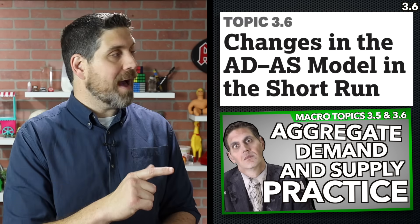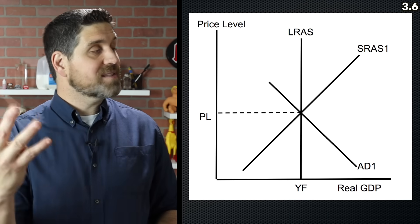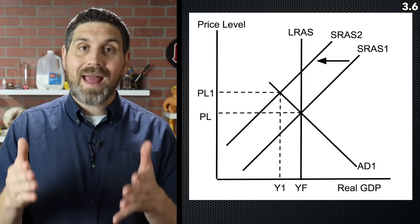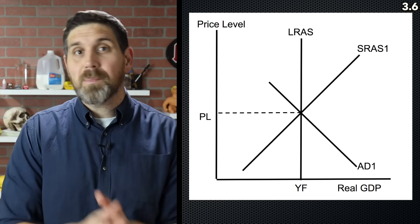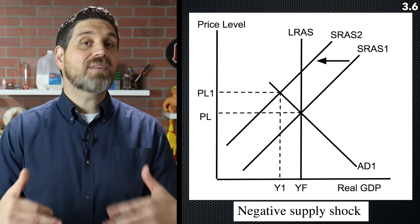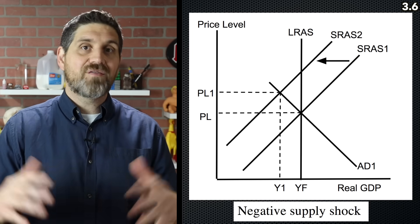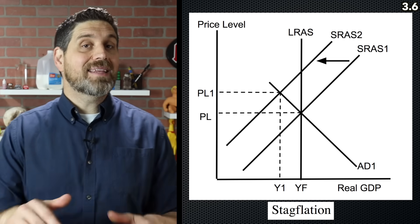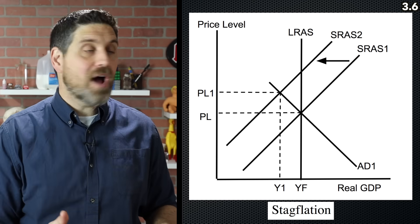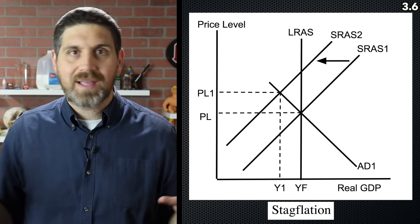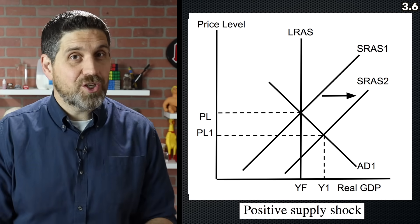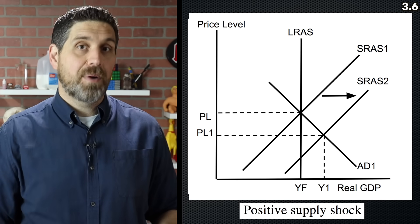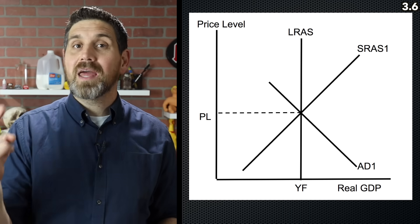Topic 3.6 is about shifting these curves. There are only four things that can happen: aggregate demand can increase, aggregate demand can decrease, short-run aggregate supply can increase, or short-run aggregate supply can decrease. A negative supply shock is when we run out of some key resource — electricity or oil — and the aggregate supply curve shifts to the left, causing stagflation. Stagflation means price level is up and quantity went down, so we have high unemployment and inflation — the worst case scenario. A positive supply shock means we have more of a key resource, so short-run aggregate supply increases, price level goes down, and we produce more output.